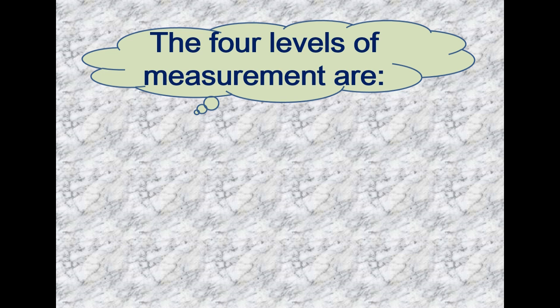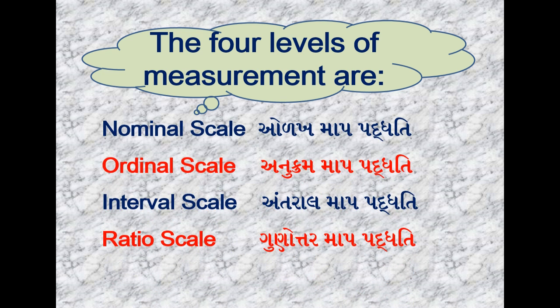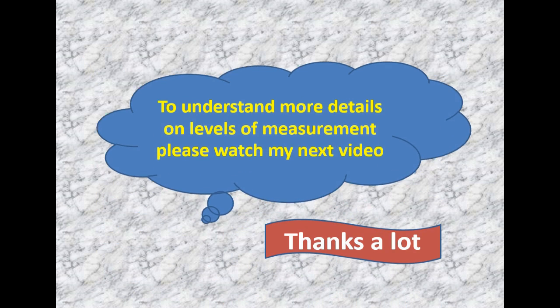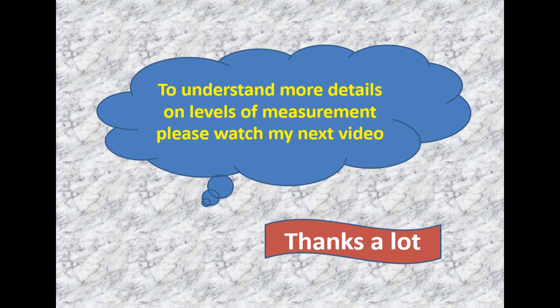The four levels of measurement are: Nominal scale (Naarak map paddati), Ordinal scale (Anukram map paddati), Interval scale (Antaral map paddati), and Ratio scale (Gunattar map paddati). To understand more details on levels of measurement, please watch my next video. Thanks a lot.